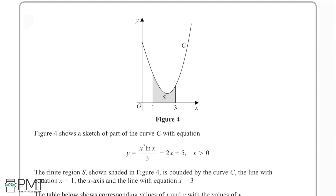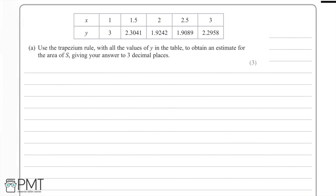In this question we have the equation y = x² ln(x) / 3 − 2x + 5. This is curve C, part of which is shown in figure 4. We can see the parabola-like shape, and there is a finite region S which is shaded, bounded by the lines x = 1 and x = 3. In part A we're asked to use the trapezium rule with all of the values given in the table to obtain an estimate for the area of S.